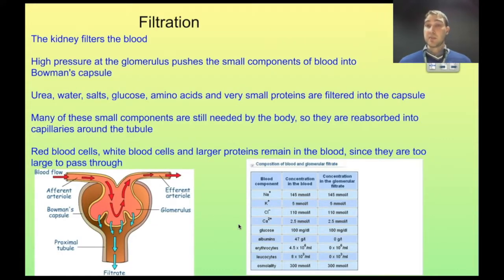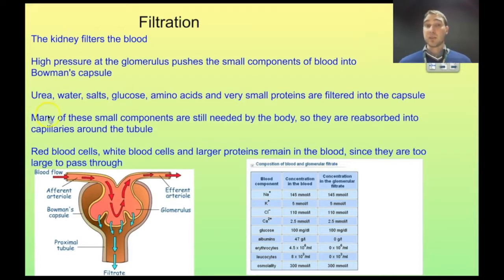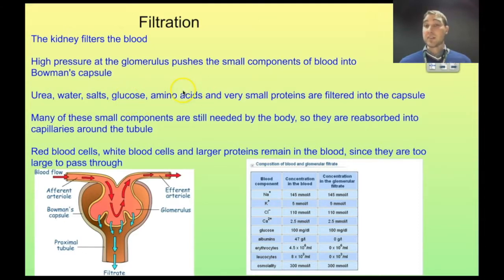The job of the kidney is to filter the blood. We have high pressure blood flowing into the glomerulus, and the small components of blood get pushed out into Bowman's capsule. Not all the blood gets pushed out — only small things that can pass between the gaps in the capillary. So things like urea, which is very small, water, salts (which are just ions), glucose, amino acids, and also very small proteins can be pushed out from the blood into the Bowman's capsule.